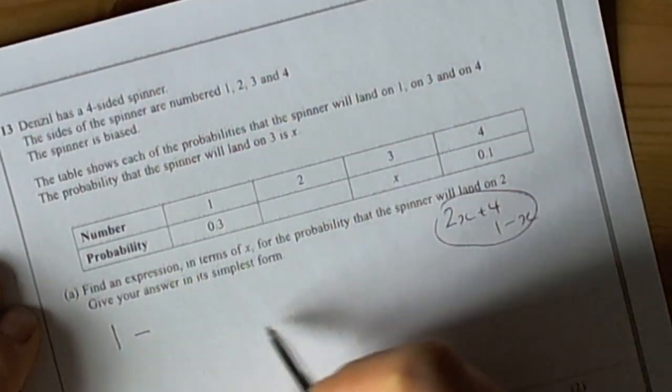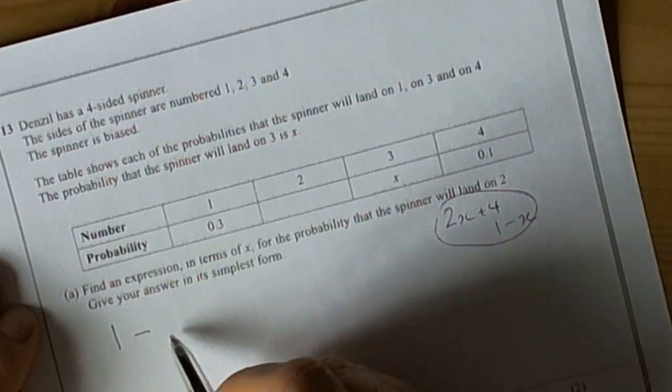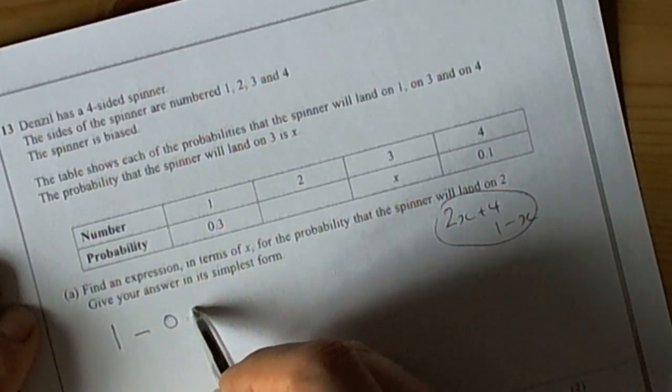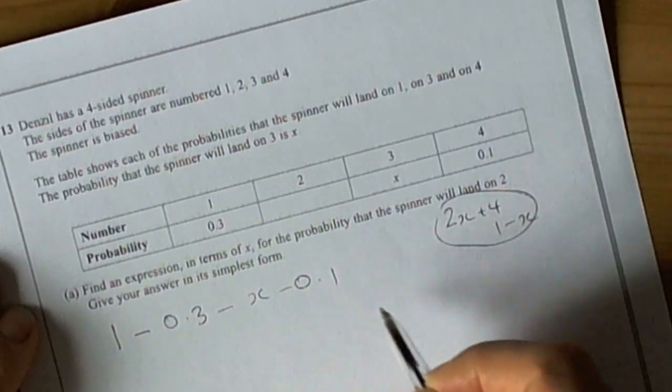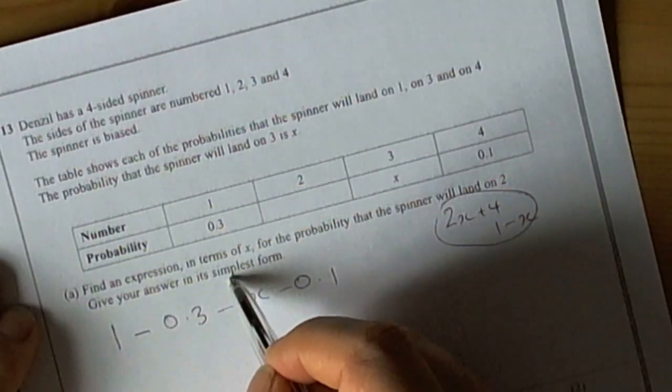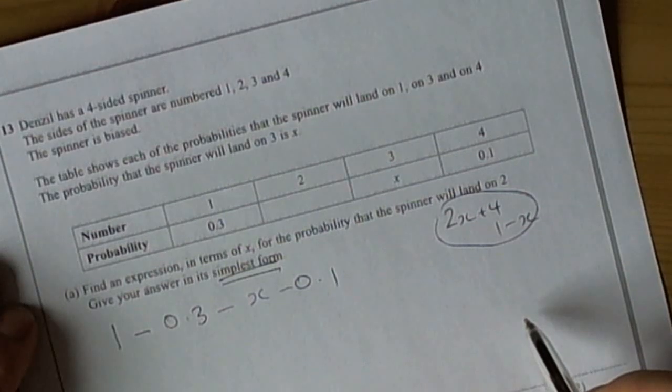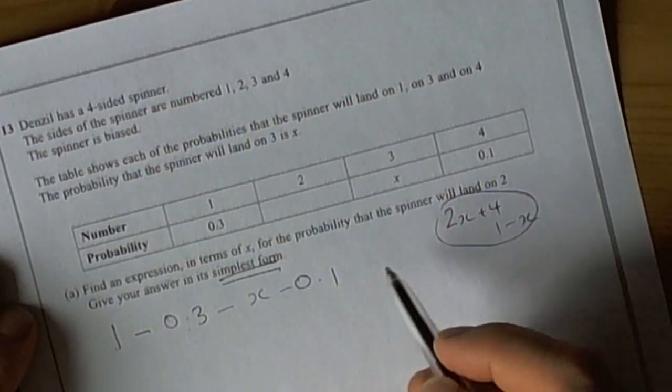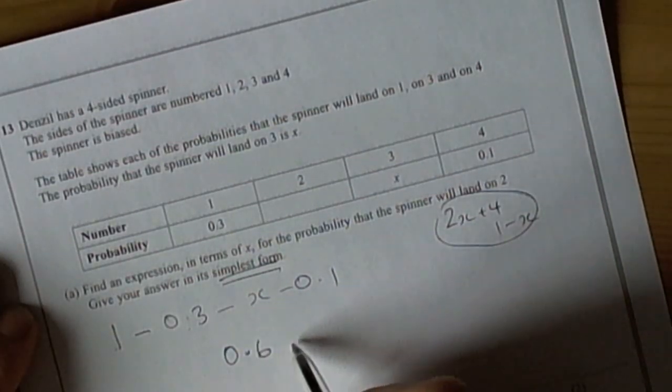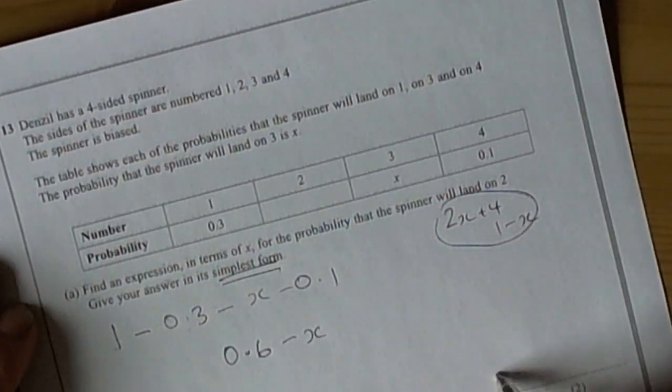So that's going to be 1 take away the other probabilities, so we're going to have 1 take away 0.3 take away x, take away 0.1. And of course it's asking us to give the expression in its simplest form, so we've got 1 take away 0.3 which is 0.7, take away 0.1 which is 0.6, so we've got 0.6 take away x in the simplest form.